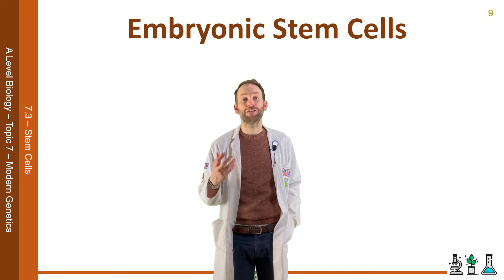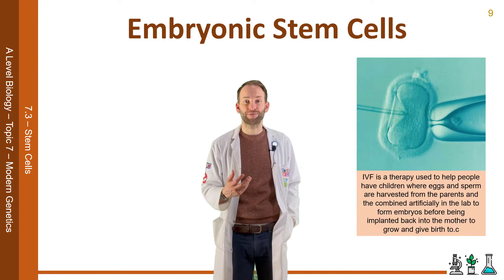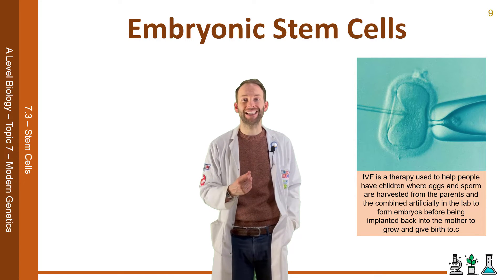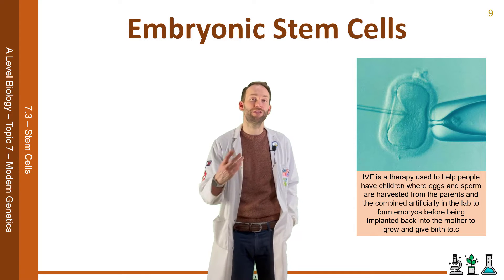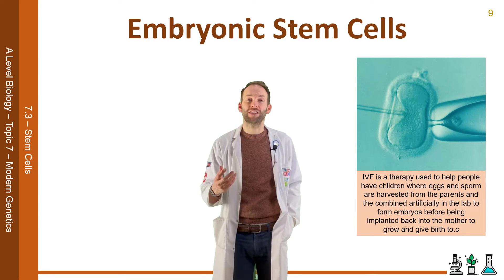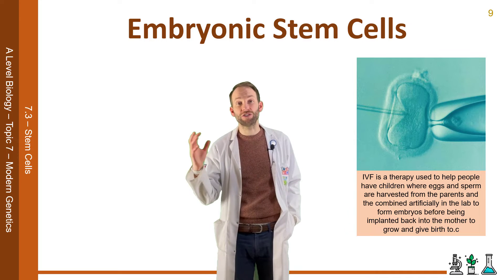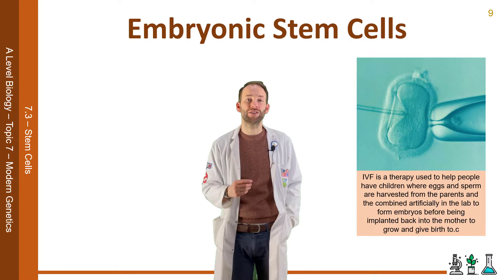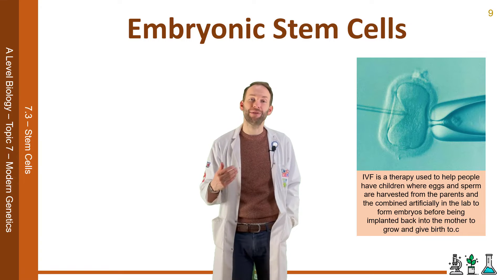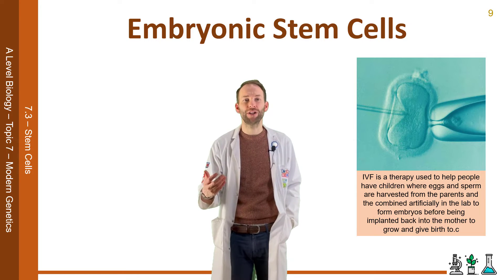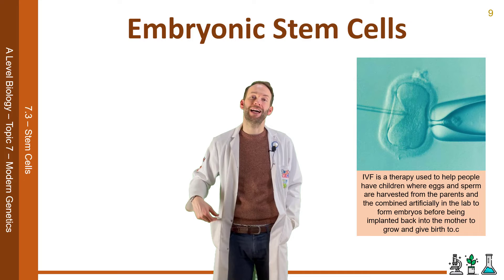The majority of embryonic stem cells come from leftover embryos after IVF, or in vitro fertilisation. IVF is used to help people have children — eggs and sperm are harvested from the parents and combined artificially in the lab to form embryos, commonly referred to as test tube babies. When doing this, scientists make more than one embryo, implant one or two into the mother, and there are usually some embryos left over. This is ethically complicated because many believe an embryo is a human life, consent cannot be given by an embryo, and some believe you are killing a human life.